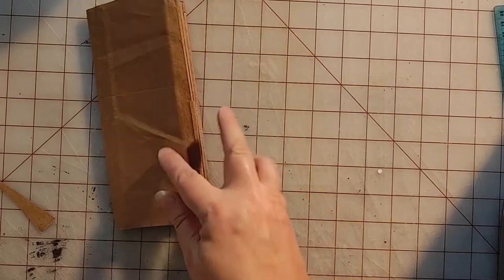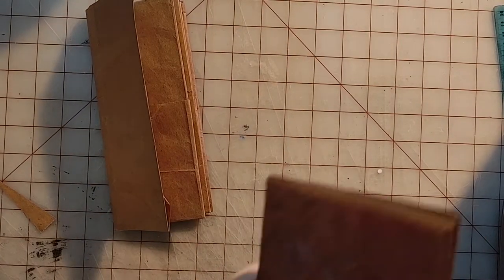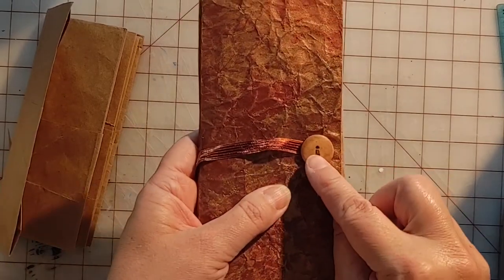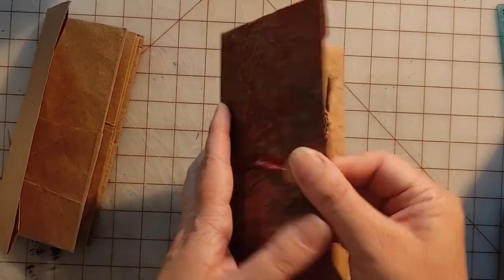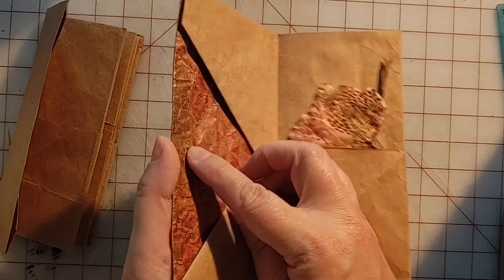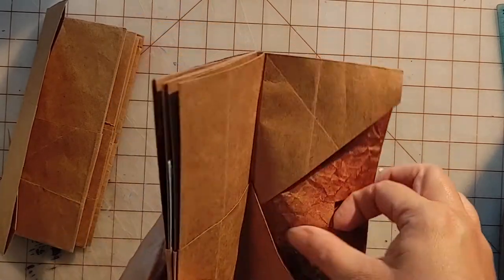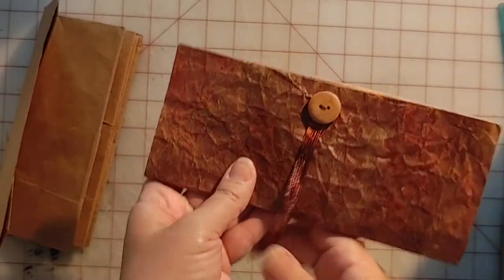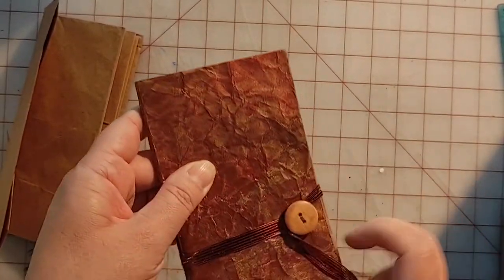So the last step is to add a fastener. On this book, I sewed a button through all the layers of my cover. Don't worry, the secret part at the back still comes off. And I added a ribbon so that I can tie it shut.